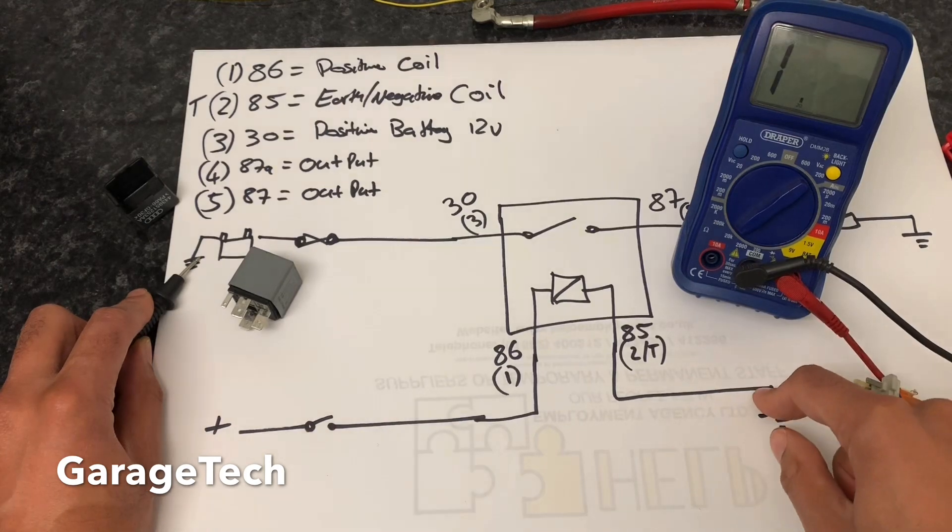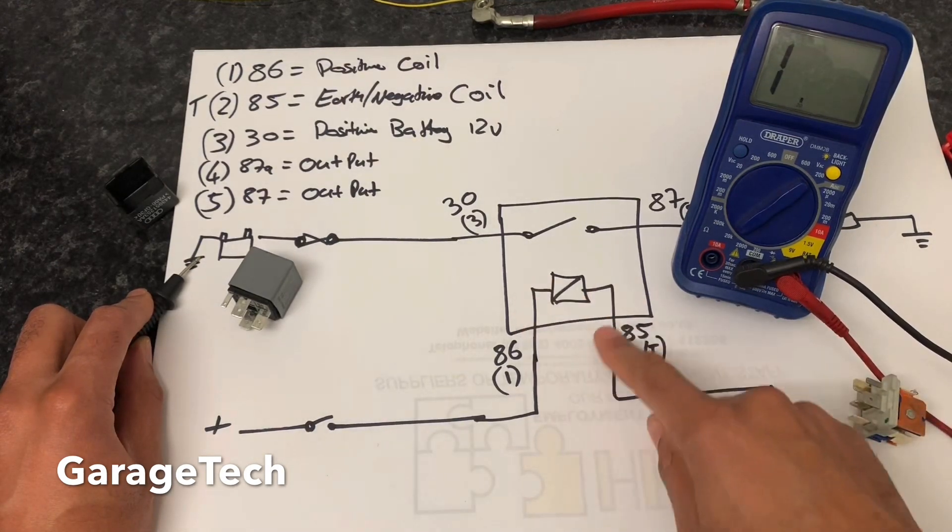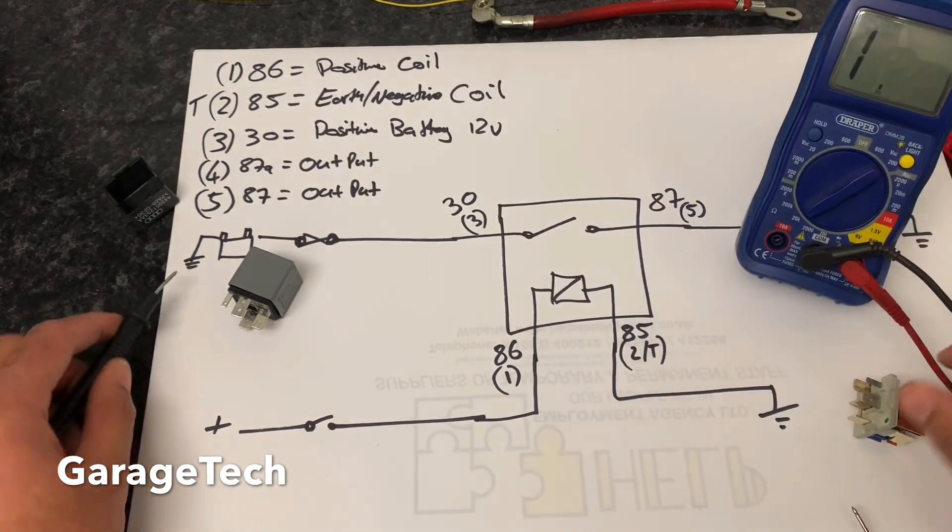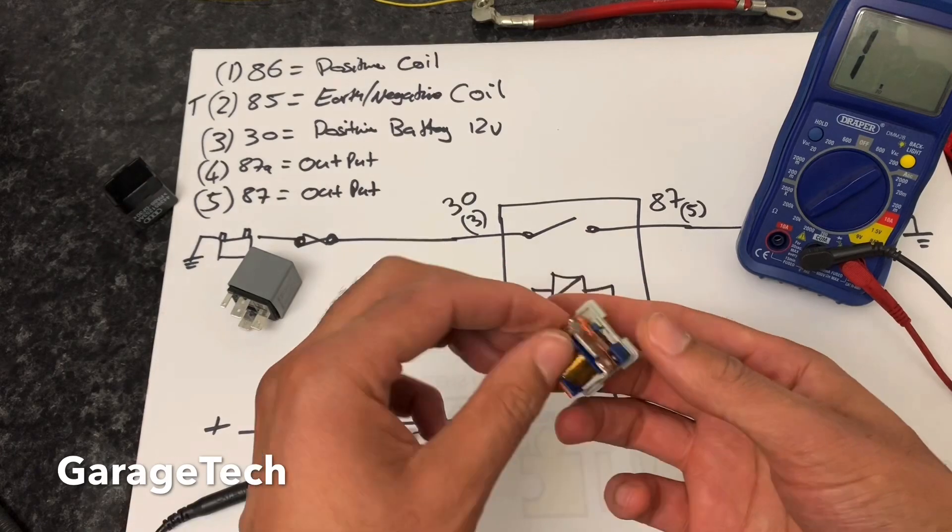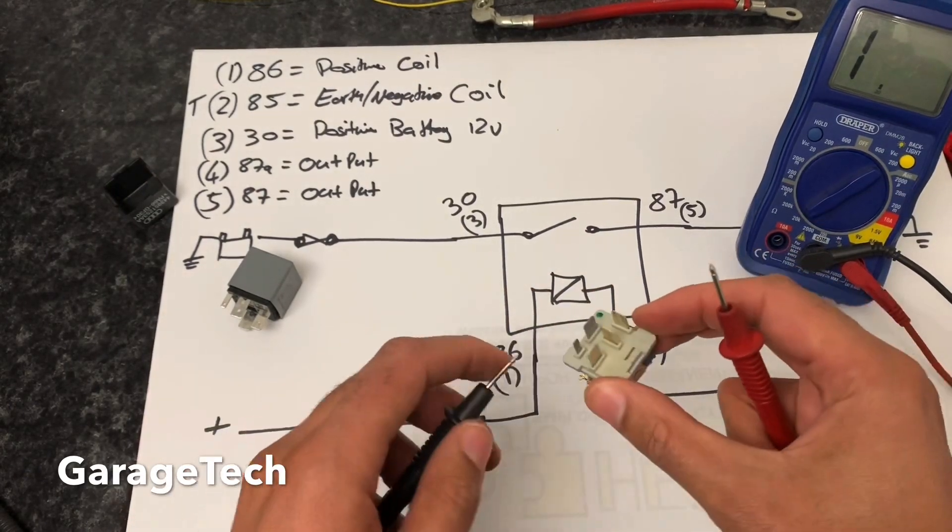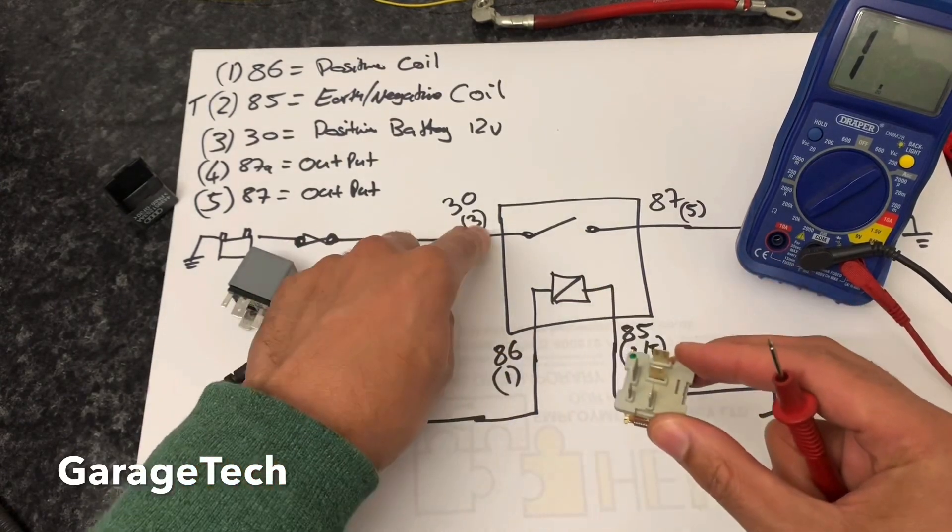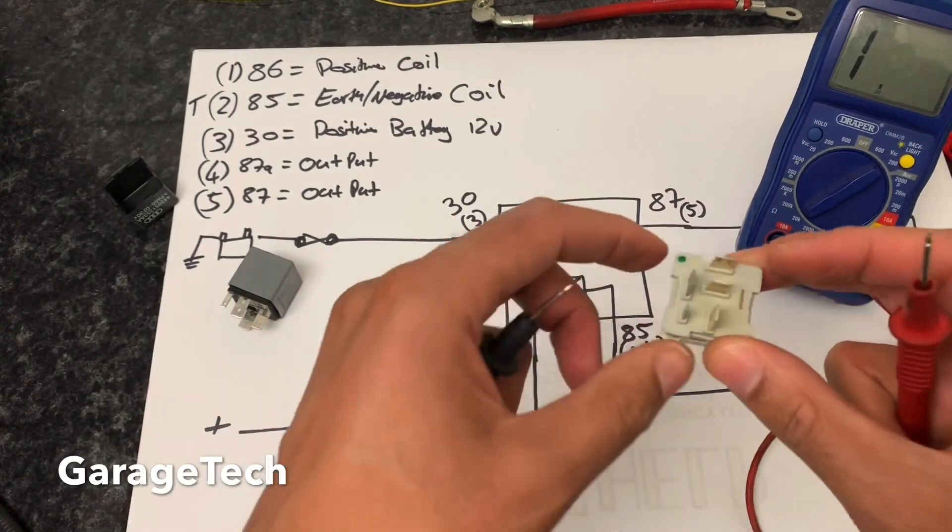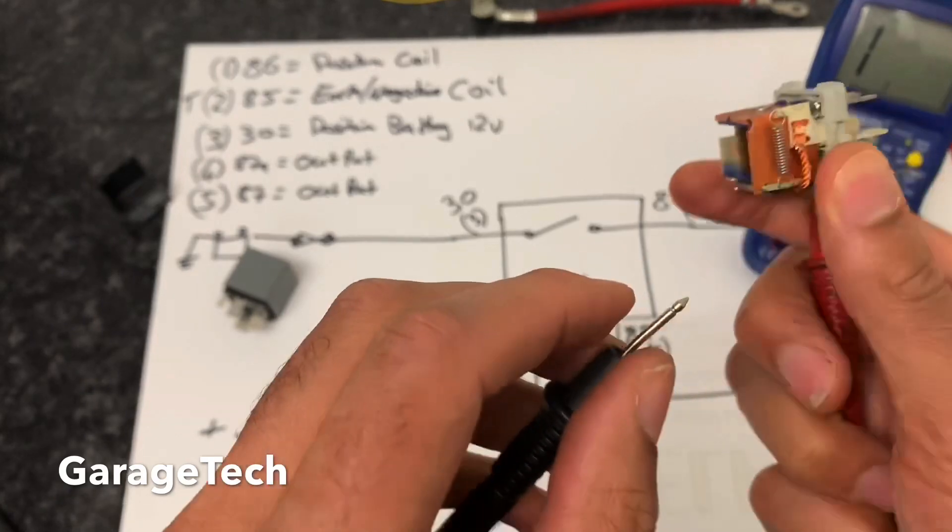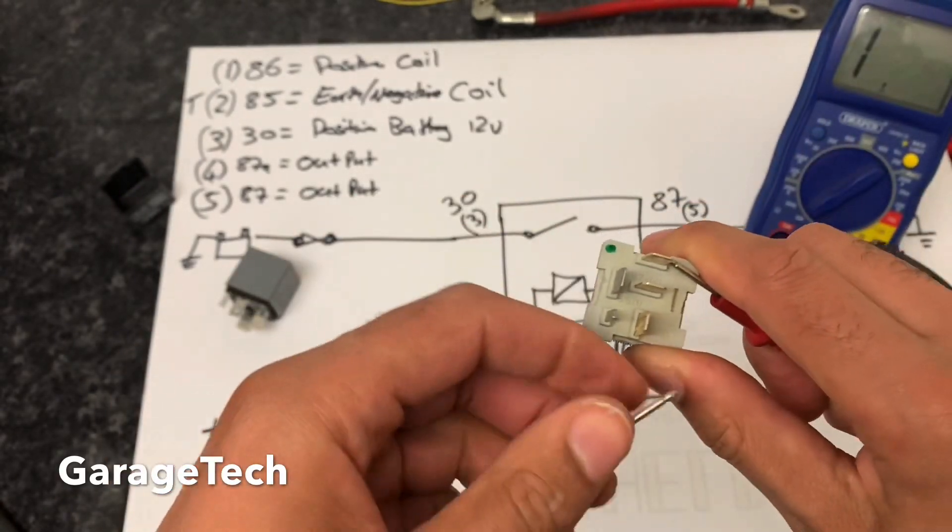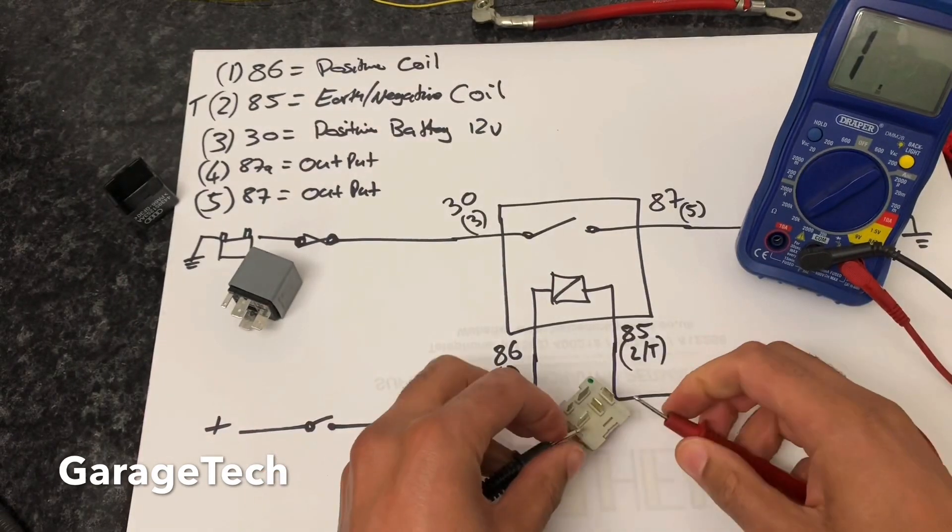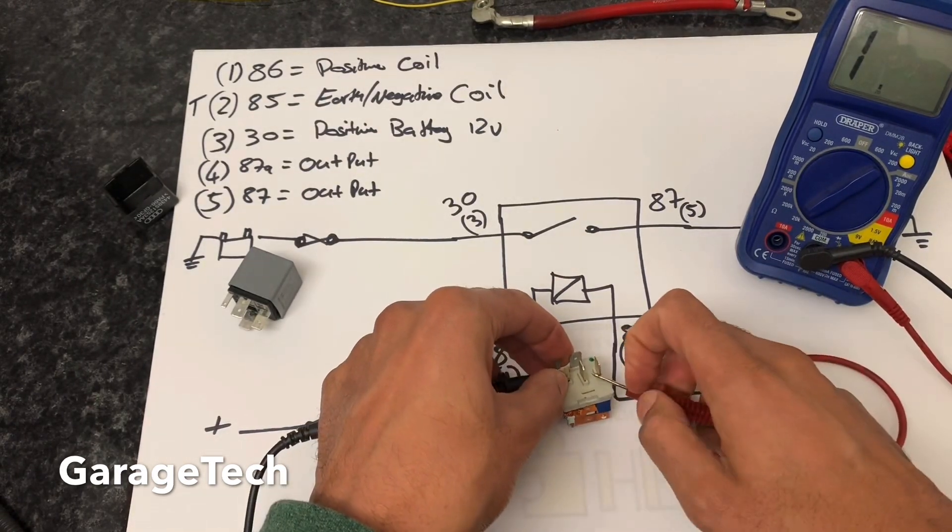Now we want to have a look at the secondary side, which is that switching circuit. Again, we can check that with the multimeter by using a resistance or ohms check. What we want to do now is check to see on pin 30, so here, and then pin 87, so there. We want to check when we press the switch.